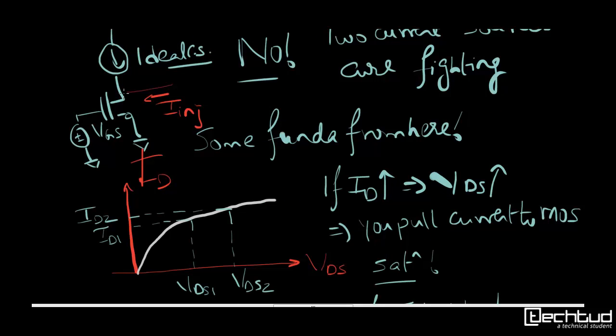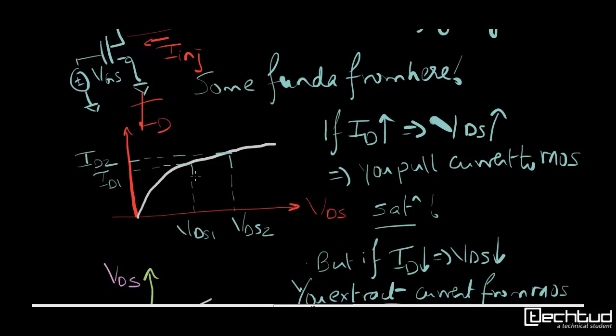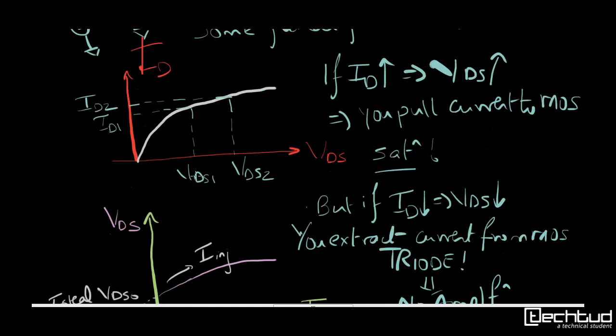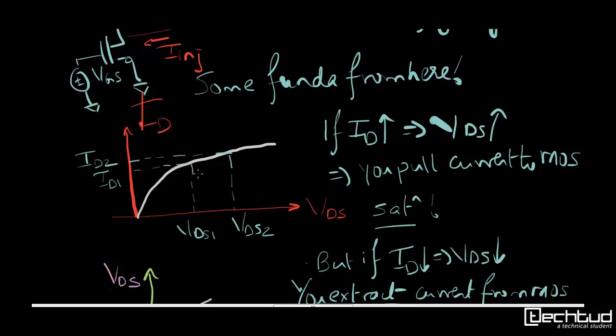If two current sources are fighting then you cannot predict what the drain potential is in that case. Even though you can make the ideal current source and VGS such that both are equal then the circuit will work, when you see process corner variations or temperature variations, these two sources are not the same. In that case this drain potential can be anything. This is not a valid condition for the transistor to operate.